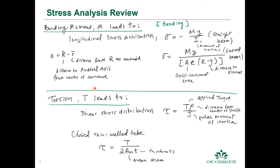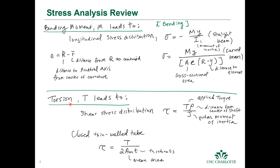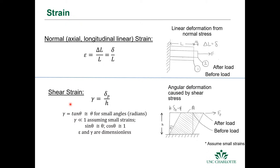Those are our four loading conditions for designing machines: axial loads, shear loads, bending moments, and torsion — that covers all the loading conditions important to us for static cases. The only other loads we really need to consider are the dynamic loads.